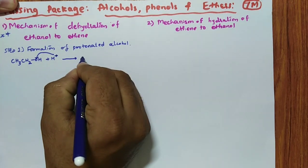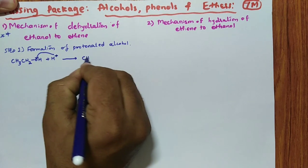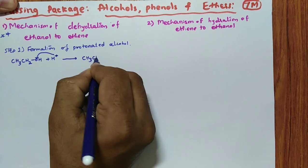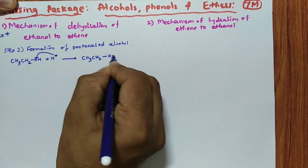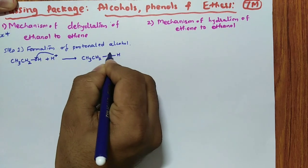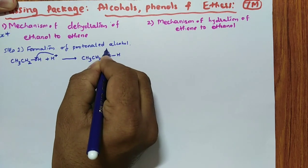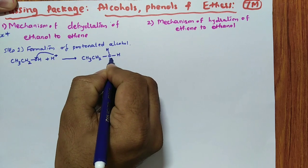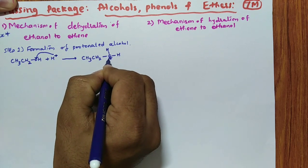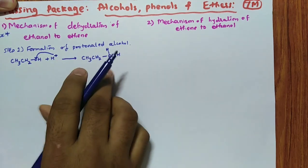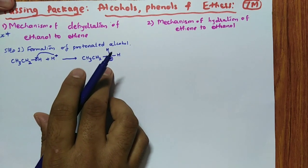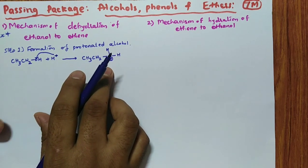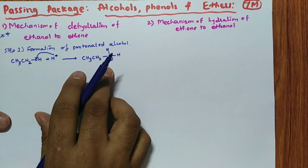So the result is CH3, CH2, OH2+ — positive charge on the oxygen. Very important this — if you don't write the positive charge, you will never get the marks, remember.